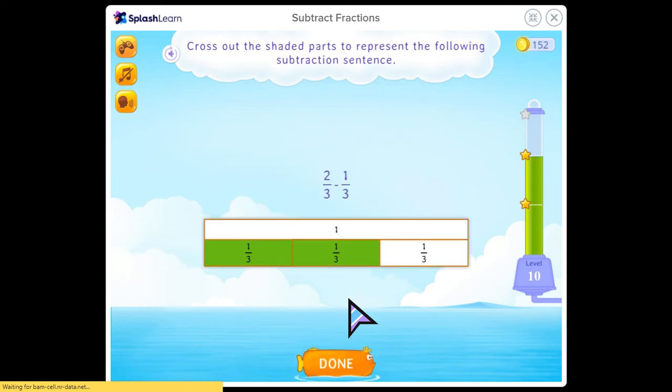Cross out the shaded part to represent the following subtraction sentence. Same thing. 2 minus 1 is 1. If the denominator answer is 1 third, so we only X out 1.